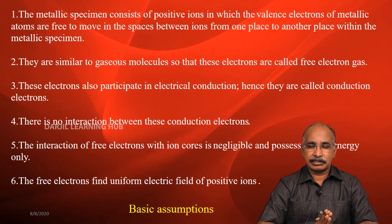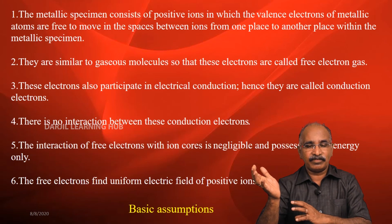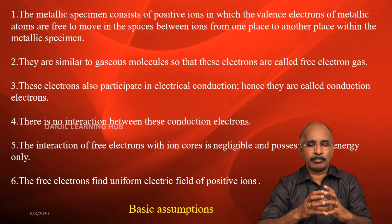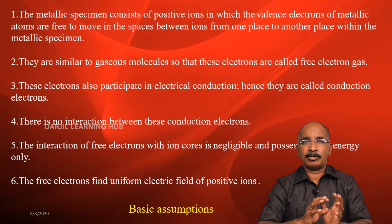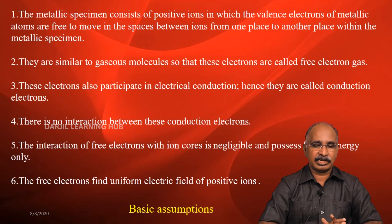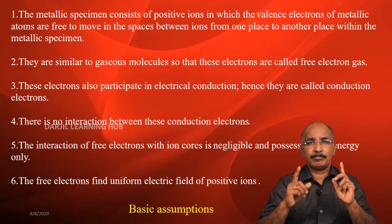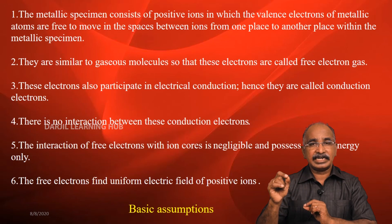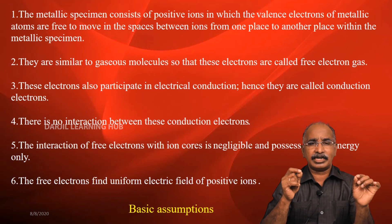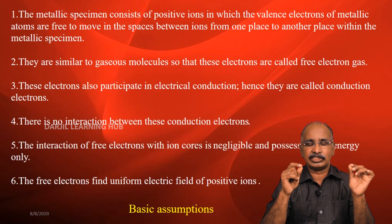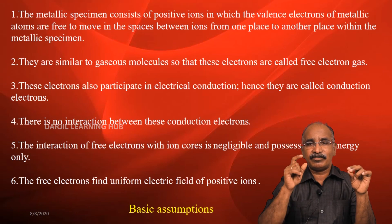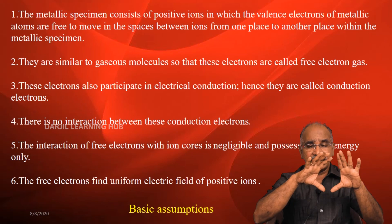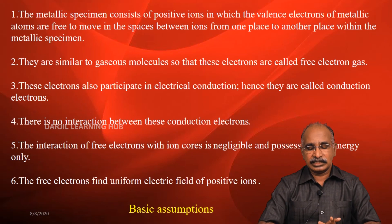This is the first assumption. The second assumption is that the free electrons behave similarly to molecules in a gas — just as gas molecules are free to move about in a container, the electrons are free to move, forming what we call a free electron gas. These electrons are the important factor for the conduction of electricity, which is why we call them conduction electrons. There is no interaction between the conduction electrons themselves, and no interaction between the conduction electrons and the positive ion core. In a uniform electric field, these electrons move freely. This is the free electron theory.